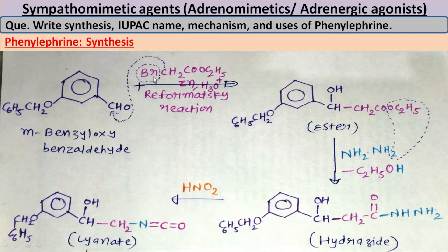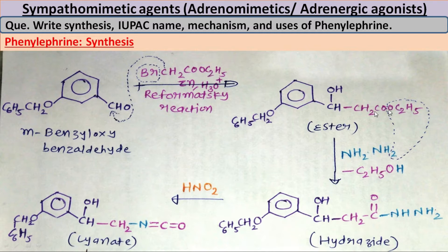This compound is treated with bromoethyl acetate in the presence of zinc and under acidic conditions. Here, bromo will be released and the remaining entire group will be attached on the aldehyde carbon via the CH2 carbon, forming an alcohol. An ester is also present, giving CHOH then CH2COO-C2H5. This type of reaction is known as the Reformatsky reaction.